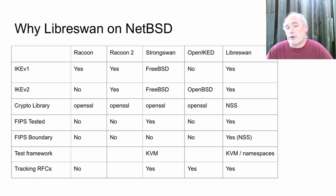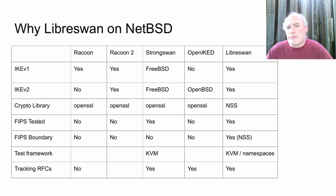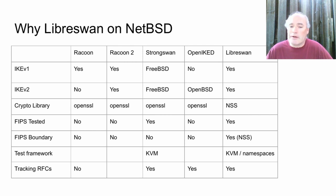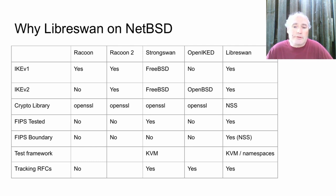Why LibreSwan on NetBSD? Here's the mandatory comparison chart. The options are Raccoon, Raccoon2, StrongSwan, OpenIKED, LibreSwan. The ones that don't actually run on NetBSD probably can be gotten to, so that's not really the reason. But when you look deeper, you find differences. Crypto library: LibreSwan uses NSS, the others use OpenSSL. You want diversity — if OpenSSL runs into trouble, you have NSS; if NSS runs into trouble, you have OpenSSL. Next is FIPS testing — a good indicator of how the codebase is going. If someone gets FIPS certification, they've probably done work to clean up how it manages cryptographic algorithms.